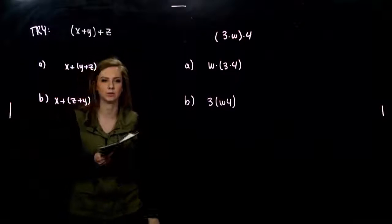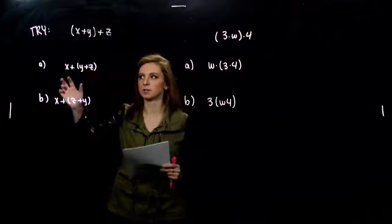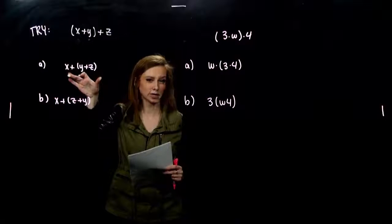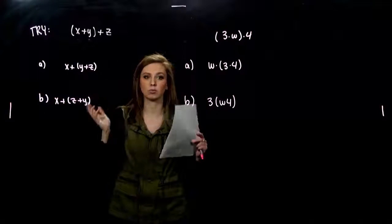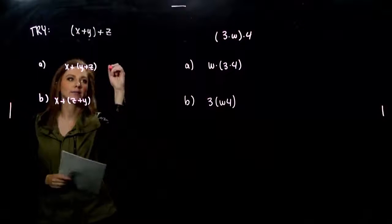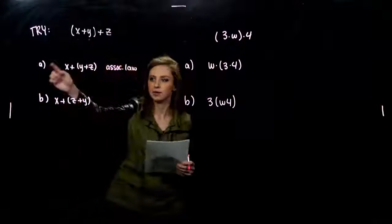So, the first question should be, did I change the order of these variables at all? I had x, y, z, and now I have x, y, z. So, I didn't commute anything. We've only regrouped. So, we used the associative law to group y and z. That's how we got from here to A.